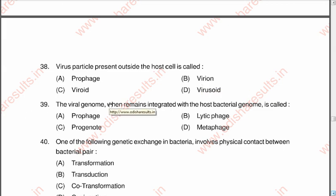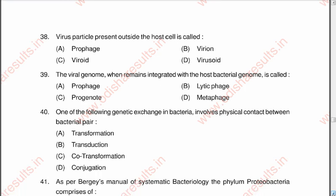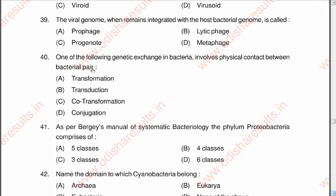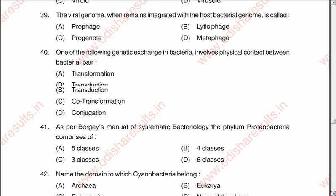Question 39: The viral genome when it remains integrated with the host bacterial genome is called A prophage, B lytic phage, C progenote, D metaphage. The correct answer is A, prophage. Question 40: One of the following genetic exchanges in bacteria involves physical contact between a bacterial pair — A transformation, B transduction, C co-transformation, D conjugation. The correct answer is D, conjugation.